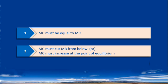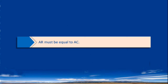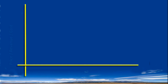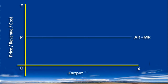The condition for Normal Profit is: average revenue must be equal to average cost. The firm accepts the price determined in the market. Its average revenue curve is horizontal, and the marginal revenue curve is the same as the average revenue curve.